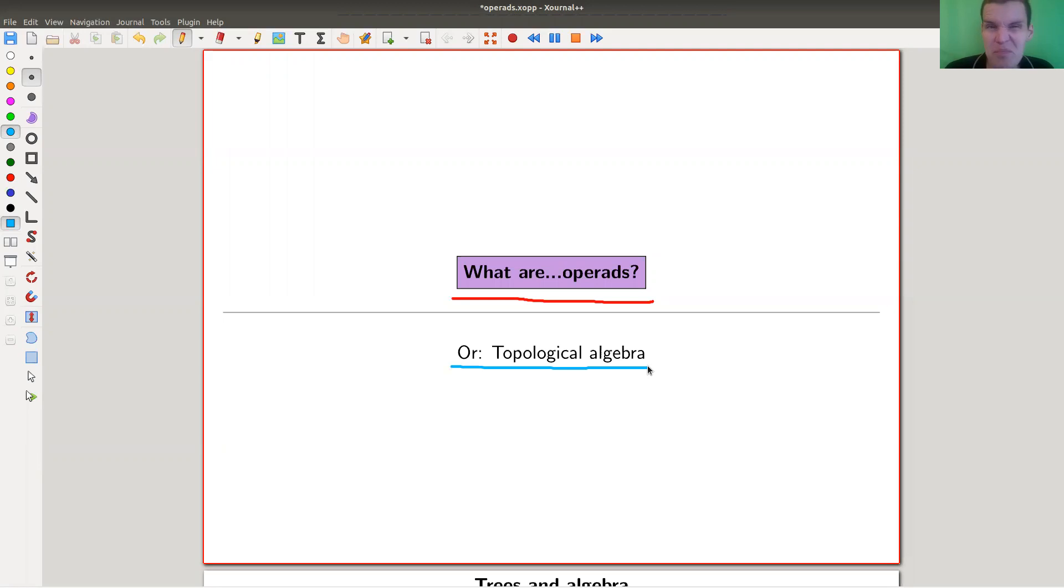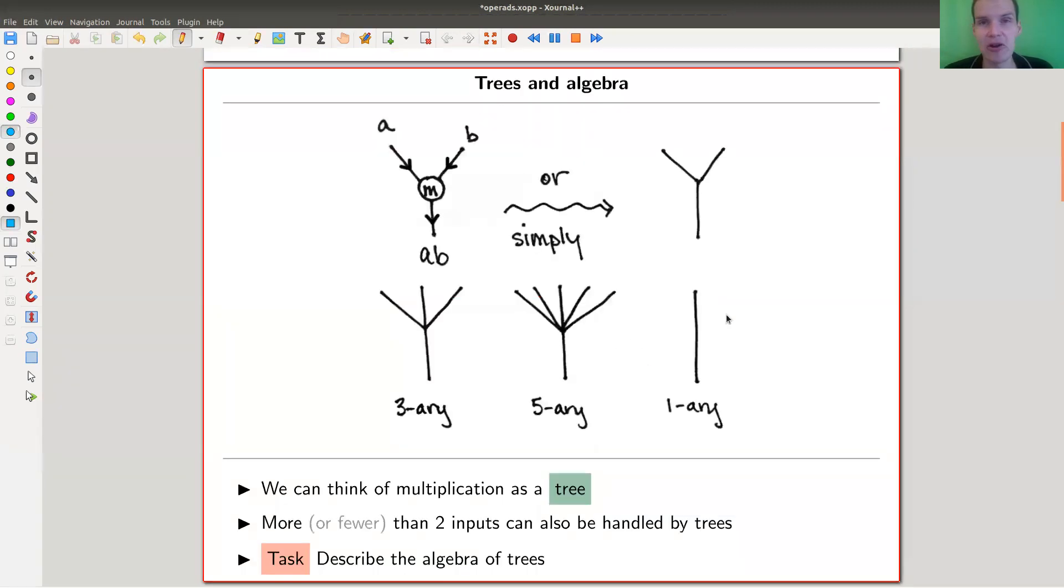So the point is you want to model multiplication, and of course multiplication is everywhere. And you model that in a topological fashion. And what you get is a definition which is very applicable in mathematics, topology in particular, because it was born from topology, but not just in topology, also in more general frameworks and even beyond mathematics in a certain way.